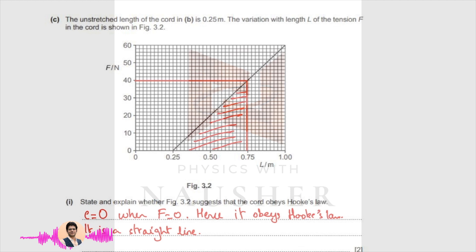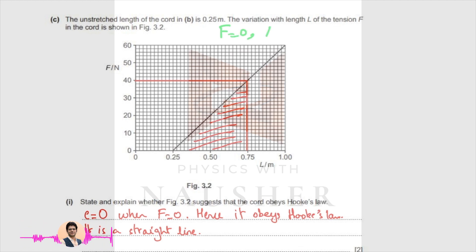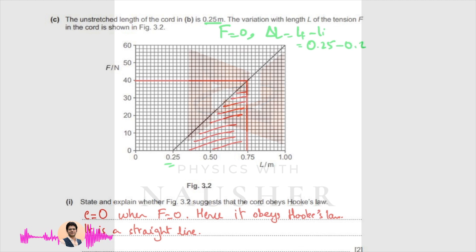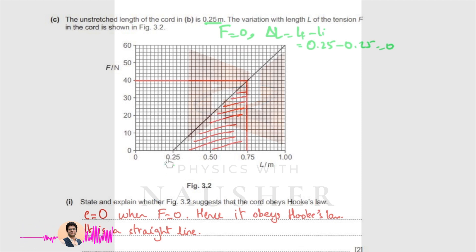The unstretched length of the cord is 0.25 meters, meaning at 0.25 meters no force is applied. The graph shows that when force is 0, the change in length — final length minus initial length — is: final length 0.25 minus initial length 0.25, giving an extension of 0. The cord obeys Hooke's Law because this is a straight line. The reason it does not pass through the origin is that the actual length is plotted, not the extension. The original length where force is 0 is 0.25, so extension is 0, and hence it obeys Hooke's Law.